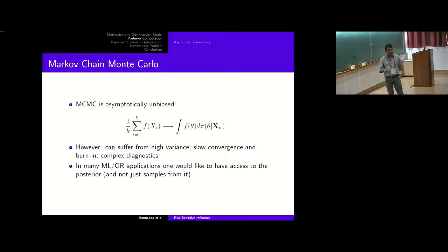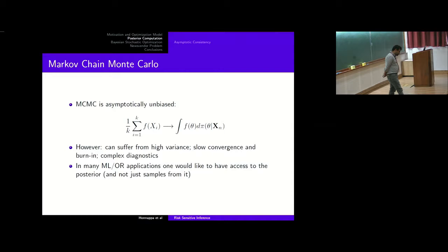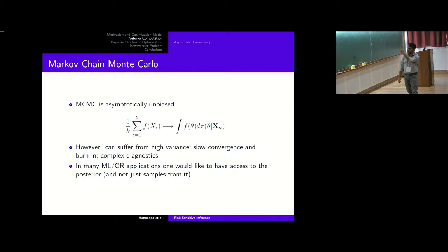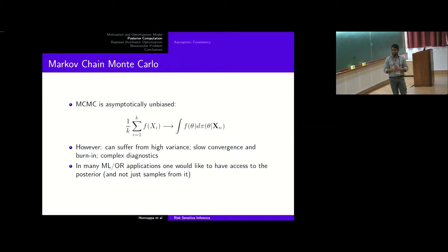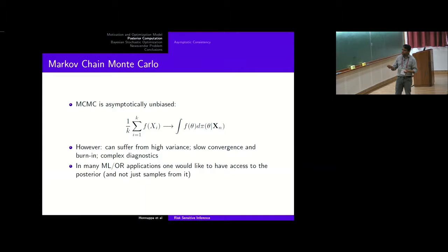You can stick these samples into any functional, and the ergodic theorem tells us this converges to the integral we wanted. However, MCMC can suffer from high variance. There are questions of how quickly it converges, how close you are to the posterior, and how long you must run before you can be confident you're getting posterior samples — leading to fairly complex diagnostics. The scaling with dimension can also be quite complex. Machine learners saw this and said, let's try something else. In many OR applications, we actually want access to the posterior itself, not merely samples from it. So how do we compute that approximately?